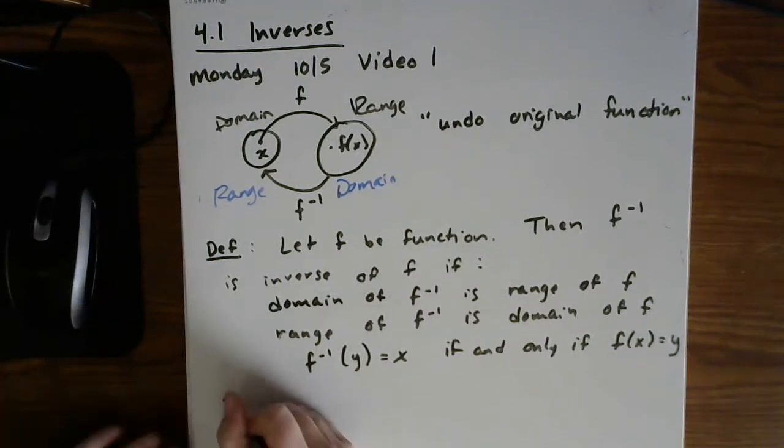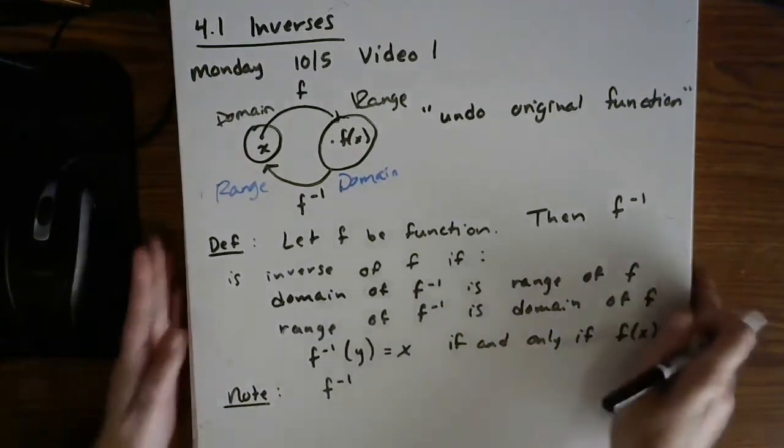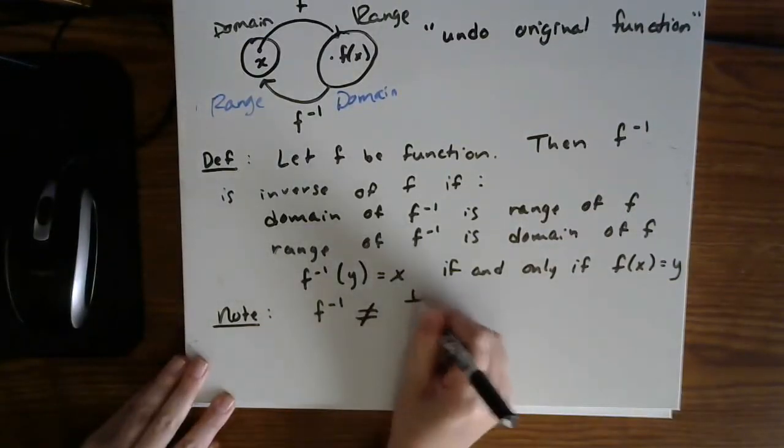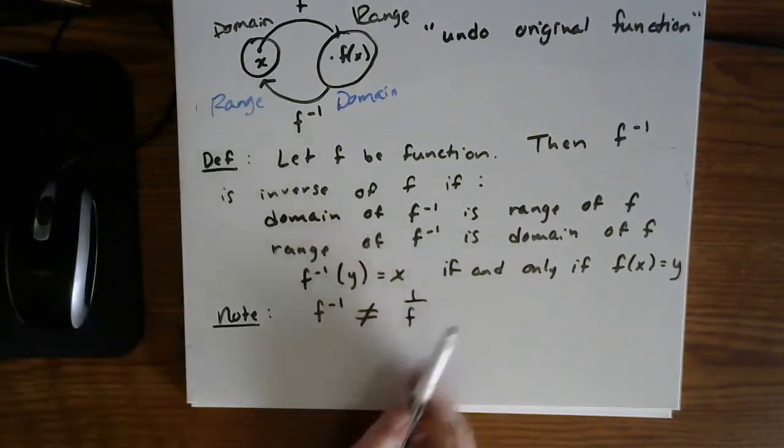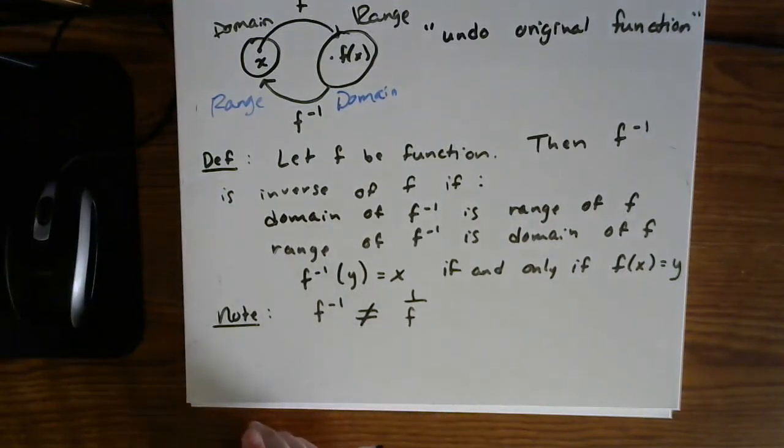So I just want to make a note here about the notation. Remember, this is inverse notation. It is not exponential notation. So it is not equal to one over f. I see students do this a lot, assuming it's an exponent. So just be careful. It is not an exponent.